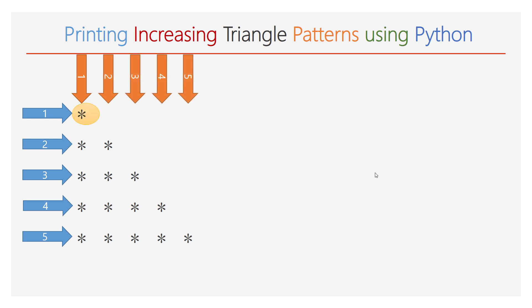Observe clearly: in the first line we have only one star. Hence, the inner loop should be iterated only one time. In the second line, during the second iteration of the outer for loop, the inner for loop should be iterated two times. Hence, two stars will be printed.